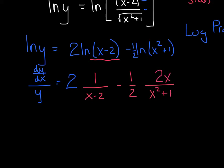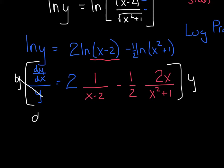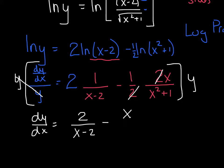It's a tad ugly, but that's okay. My goal is to get dy/dx by itself, so all I'm going to do is multiply both sides by y - multiply this side by y, it will cancel that denominator, and just remember you have to balance your equation. So I get dy/dx equals: I'm not going to go too crazy cleaning up - that's 2 over x minus 2, minus - those 2's will cancel - x over x squared plus 1, and it's all of that times y.